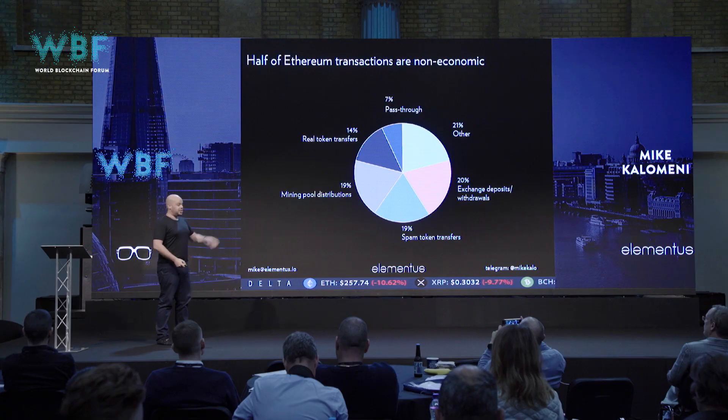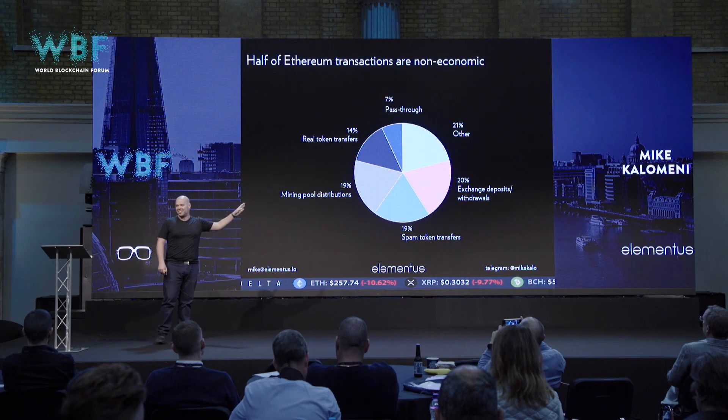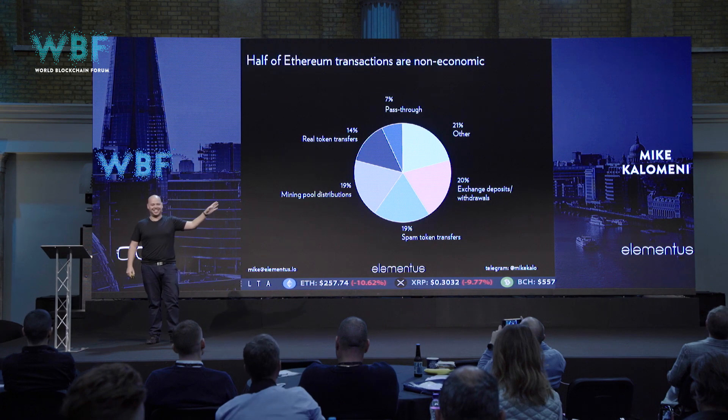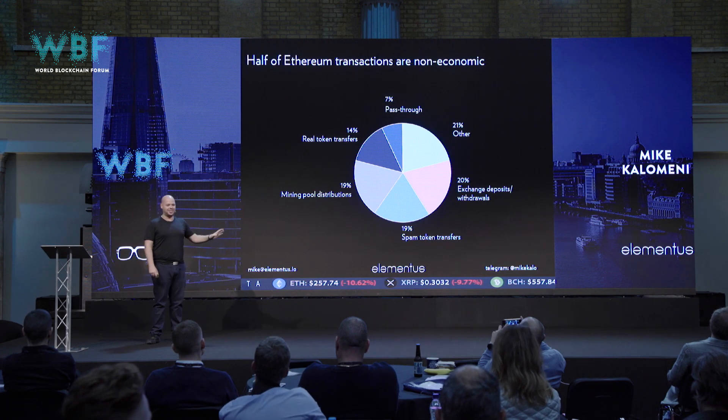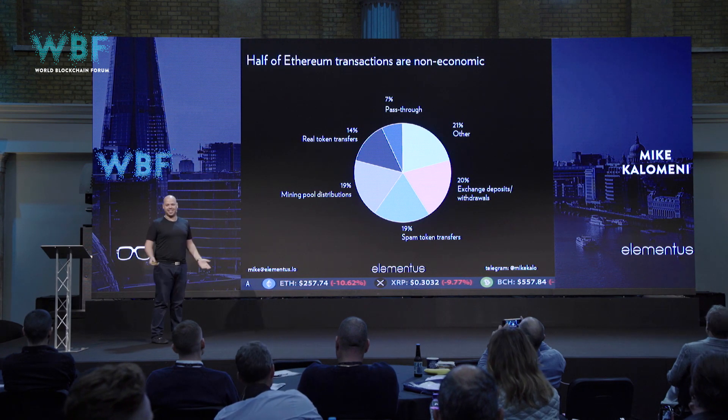Then you have mining pools and real token transfers. The remaining 21% includes dApp usage, ICOs issuing tokens, and OTC transfers. So that's really the minority of the network being used for what Ethereum is supposed to be — the majority.